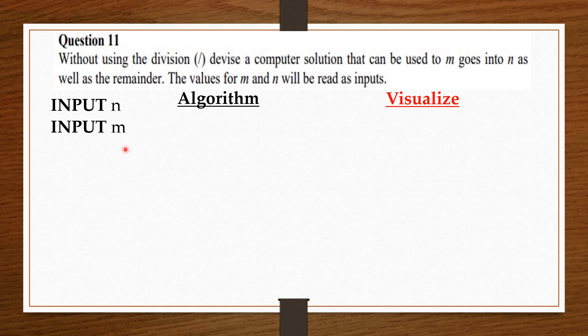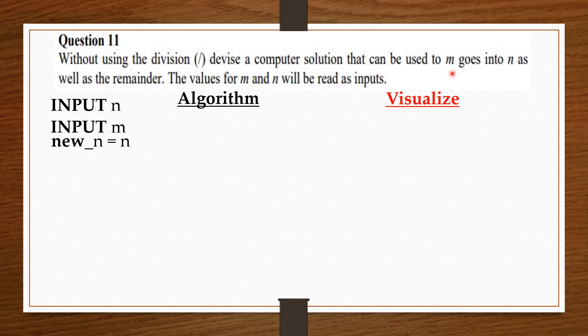Now, we are going to store a copy of the user's dividend, which is n, in a new variable called new_n. So, we say new_n equals n. As we go along, I'll explain why we are saving a copy of the dividend n in the new variable new_n. Since we are going to find the number of times the divisor m goes into n, we create an empty variable to store that count. So, counter equals zero.